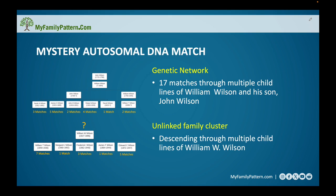The first example involves a mystery autosomal DNA match that was part of a genetic network. As you can see in the images on the left, on the top portion is my line — I descend through James H. Wilson. When I started looking at my DNA matches, I noticed there was another Wilson family that was part of this genetic network, but I couldn't figure out how. This match matched several other people who descended from John Wilson, born 1784, and his brother William Wilson, born 1793.